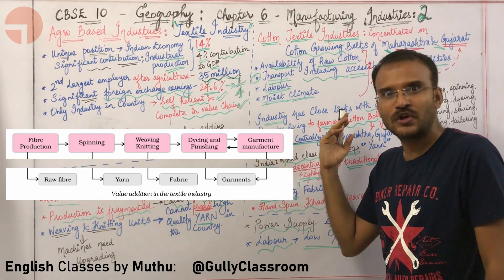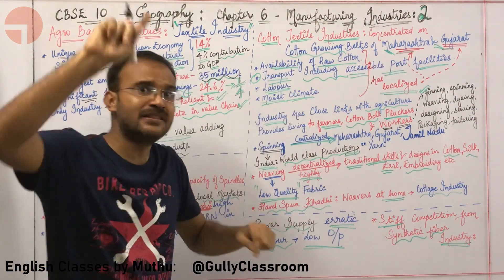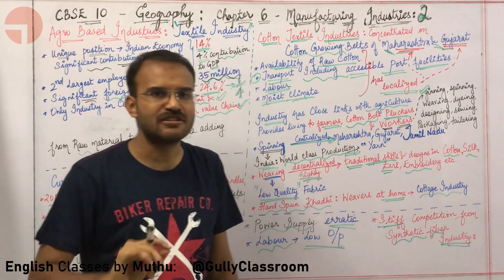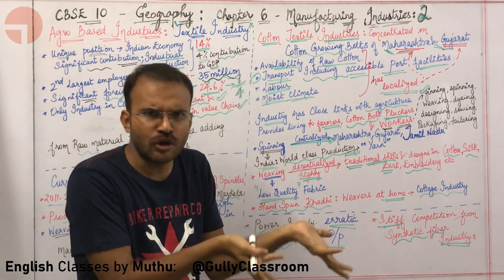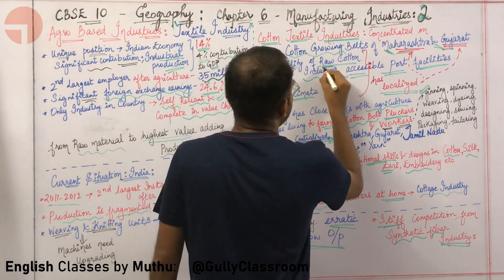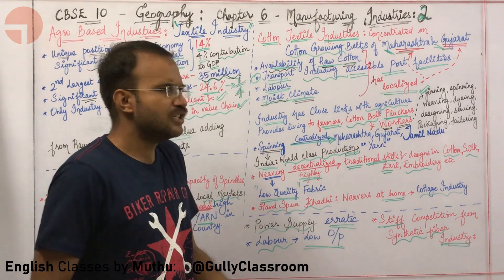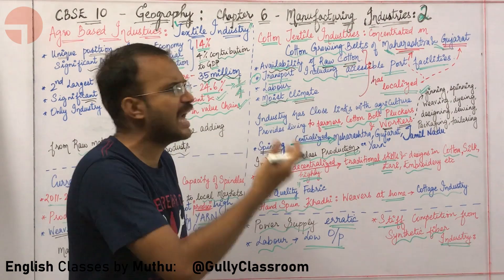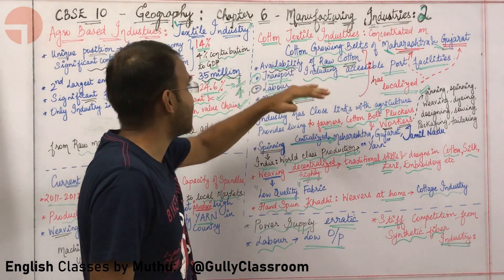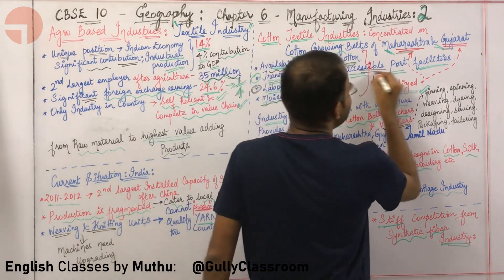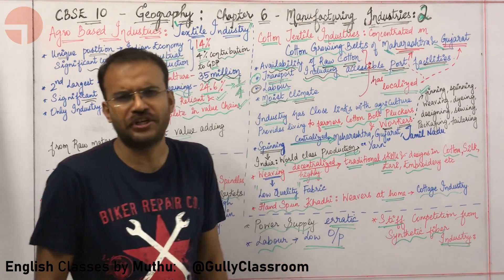Now, why are cotton textile industries concentrated in Maharashtra and Gujarat? First, as we saw in the agriculture unit, Maharashtra and Gujarat have black cotton soil, which is ideal for growing cotton — so there is abundant availability of raw cotton. Second, cotton needs a moist climate, which is also present in these states. Third, both have large metro cities that provide abundant labor. Fourth, Maharashtra has a good transport system including port facilities like Bombay and Navi Mumbai ports, which are used for exporting cotton-based products.